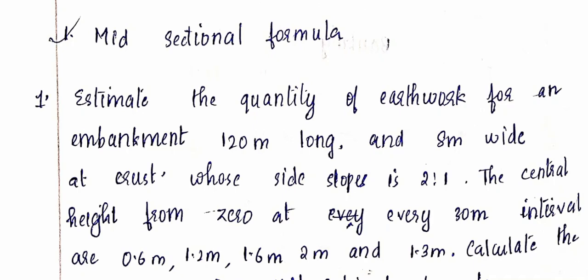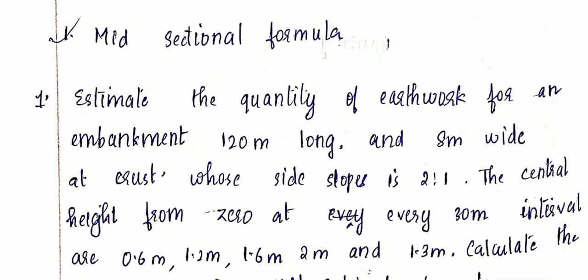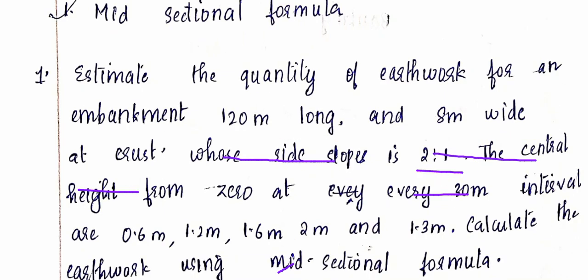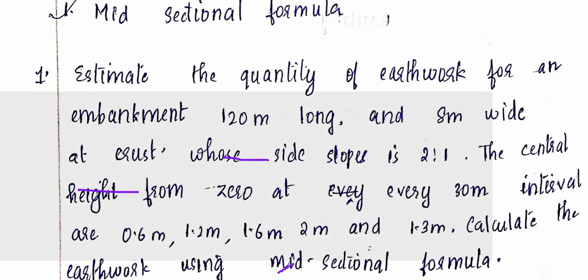Today we are discussing the mid-sectional formula method for estimation of earthwork for road construction. Problem: estimate the quantity of earthwork for an embankment 120 meters long and 8 meters wide at crest, whose side slope is 2:1. The central heights from zero at every 30-meter interval are 0.6, 1.2, 1.6, 2.0, and 1.3 meters. Calculate the earthwork using the mid-sectional formula.